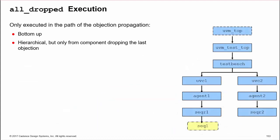Multiple all_dropped implementations can be executed, but only those in the propagation path of the last objection dropped. When an objection is dropped, it propagates up the hierarchy from the drop location to UVM top. Therefore, all_dropped execution is bottom-up and hierarchical, but only from the drop location.